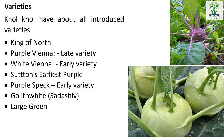Varieties: इसकी ज़्यादातर किस्में introduced हैं — विदेशों से लाके यहाँ बोई जा रही हैं। जैसे King of North, Purple Vienna (late variety), White Vienna (early variety), Sutton's Earliest Purple (early variety), Goliath White जिसे सदाशिव भी कहते हैं, और Large Green।